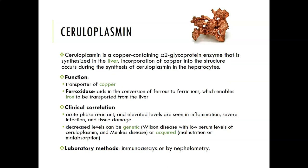Ceruloplasmin is a copper-containing alpha-2 glycoprotein enzyme synthesized in the liver. The incorporation of copper into ceruloplasmin occurs during its synthesis in the hepatocytes, so the liver takes up copper and adds it to ceruloplasmin for transport — obviously transporting copper. Its ferroxidase activity also aids in the conversion of ferrous to ferric ions, enabling iron to be transported from the liver, and it uses copper to do this.